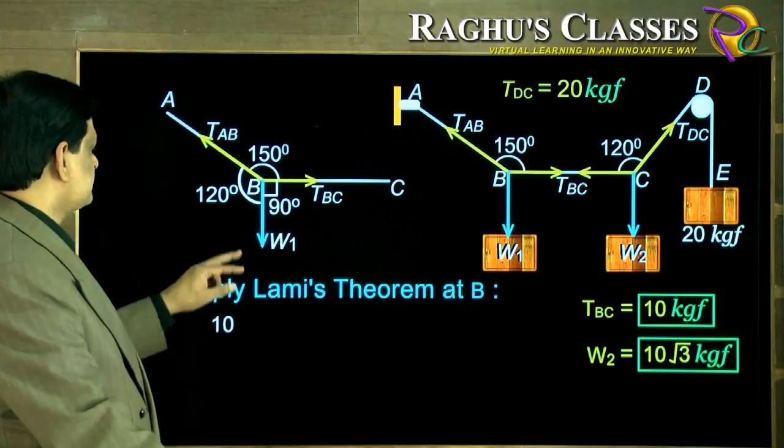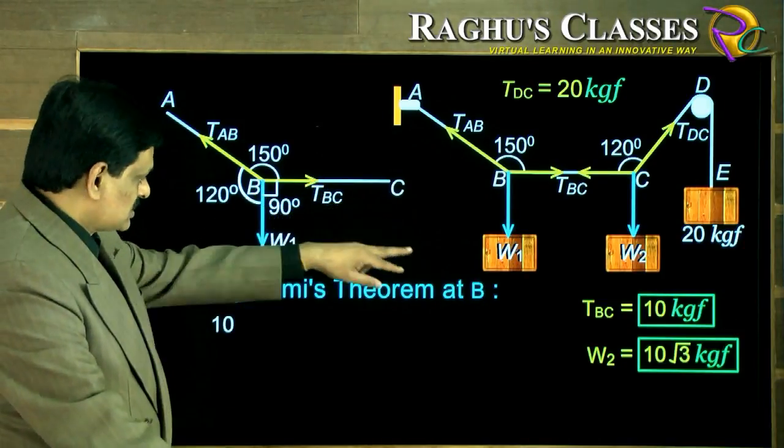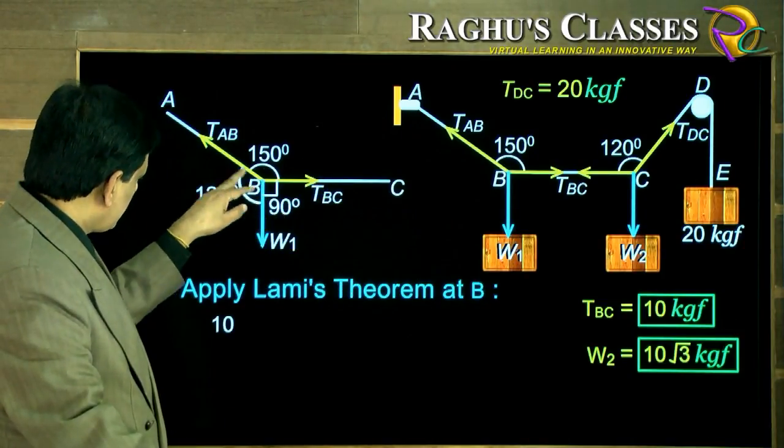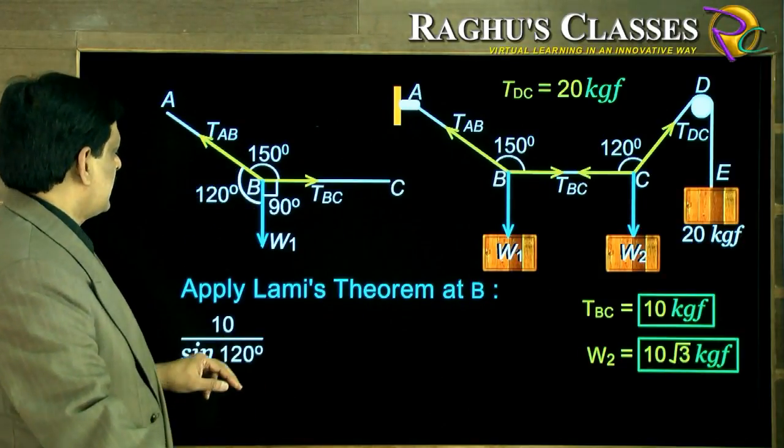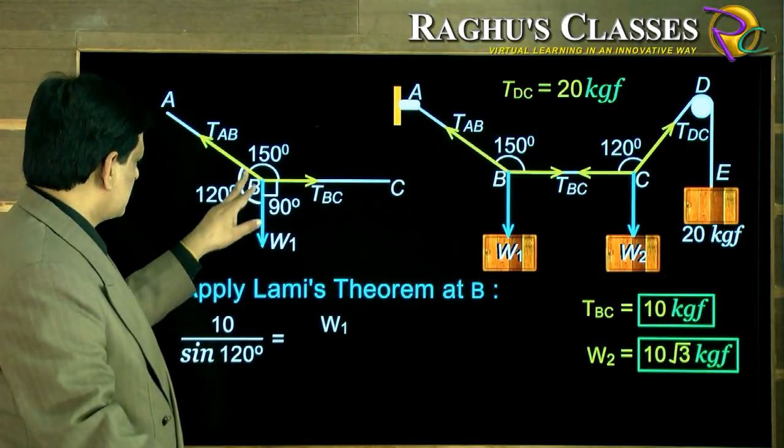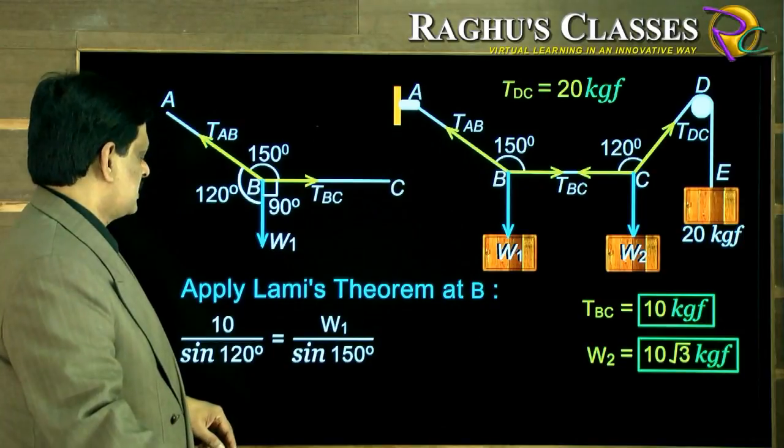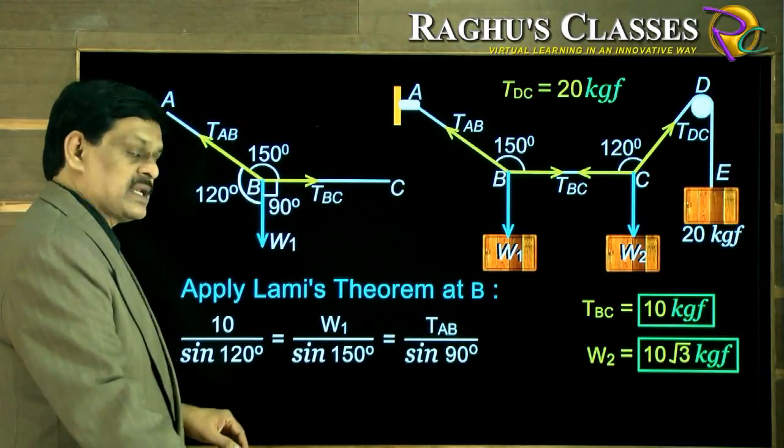If you take that TBC, I took directly as 10 because I got the value there. 10 upon opposite angle 120, that equals W1 upon sin of opposite angle 150, equals TAB upon sin of opposite angle 90.